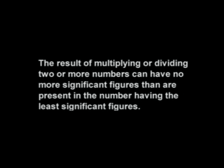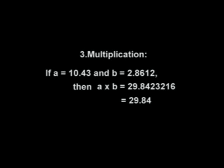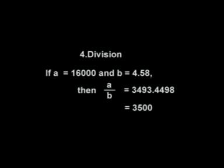Significant figures in multiplication and division: the result can have no more significant figures than the number with the fewest significant figures. Multiplication example: A = 10.43, B = 2.8612; A × B = 29.8423216 ≈ 29.84. Division example: A = 16.000, B = 4.58; A/B = 3.4934... ≈ 3.49 (or expressed as 3500 based on significant figures of B).